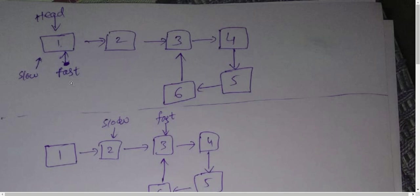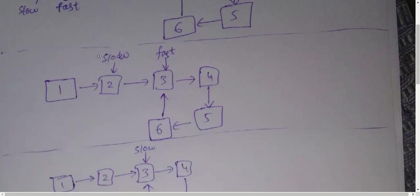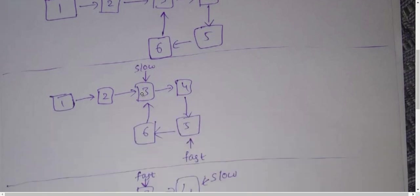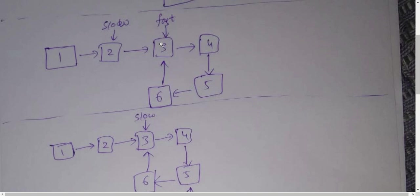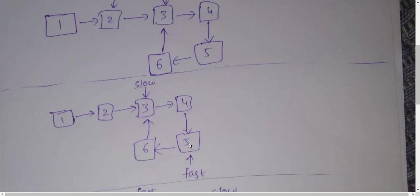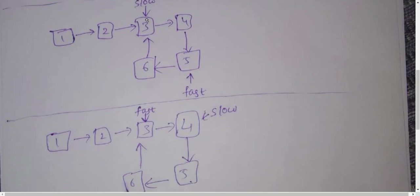Initially, slow and fast are both pointed to head. After the first iteration, slow will be pointed to node 2 - slow iterates one node - and fast will be two nodes ahead. In the next iteration, slow comes from 2 to 3, and fast comes two jumps: from 3 to 4 and 4 to 5. Then slow jumps from 3 to 4, and fast jumps two times from 5 to 6 and 6 to 3, so fast comes back around.